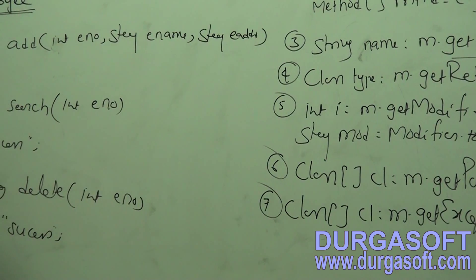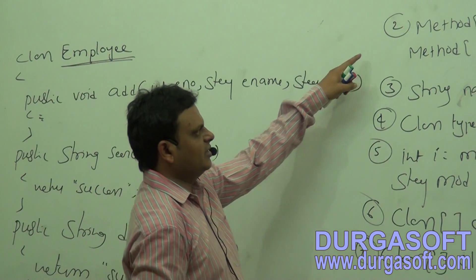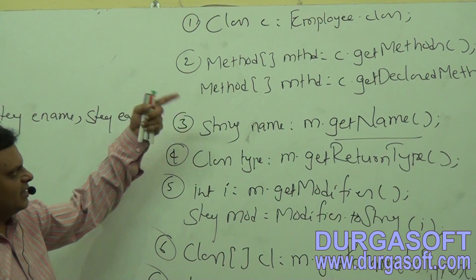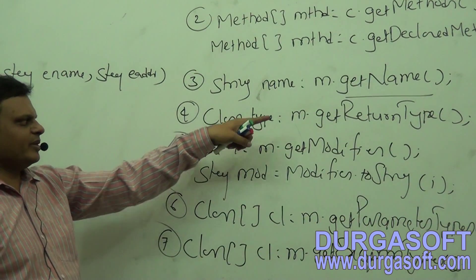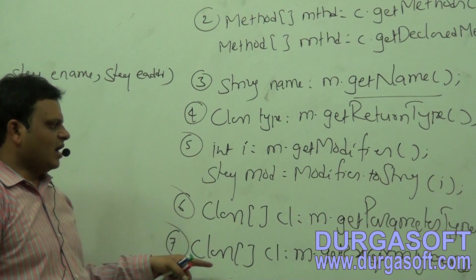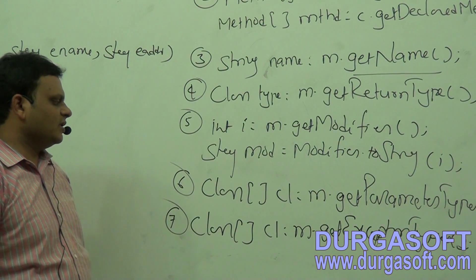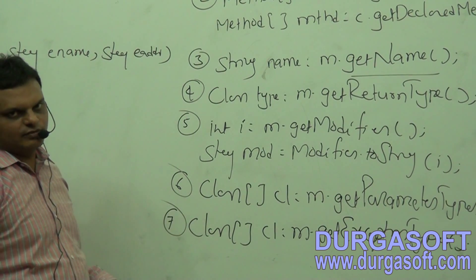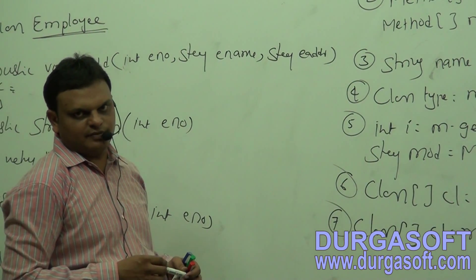These are the various methods we are going to use to get information about our methods. First we need to get the class object. Next we need to get all the methods metadata in the form of a method array. After getting data from the method array by retrieving method objects, we get the name of the method, return type, access modifiers using the modifiers method, all parameter types, and all exception details in the form of an array. These are all the details of the respective methods clearly.